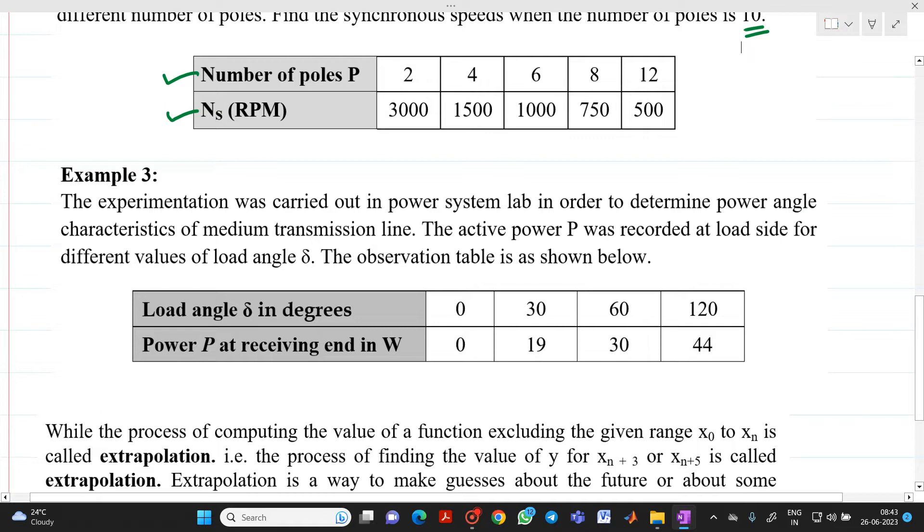Again, suppose if the experimentation has been carried out for determining power angle characteristics of a medium transmission line and we have a load angle data in degrees and receiving end power, active power P has been given and suppose if I want to find out delta equal to 50 degree, then what will be the active power P at receiving end? That we have to find out. Then we will be able to find it out with the help of this interpolation.